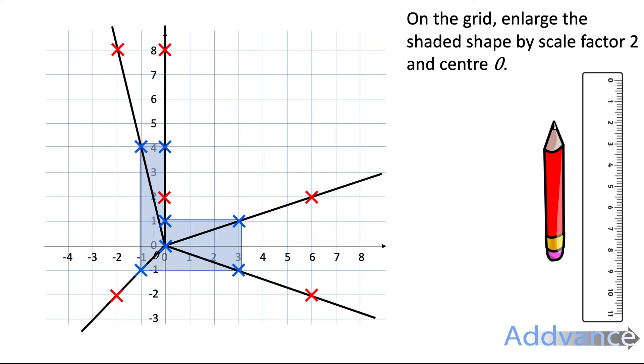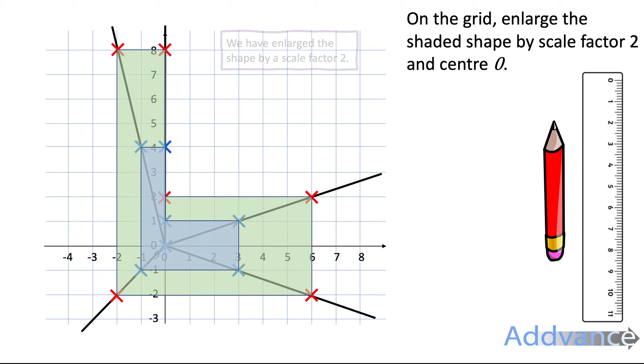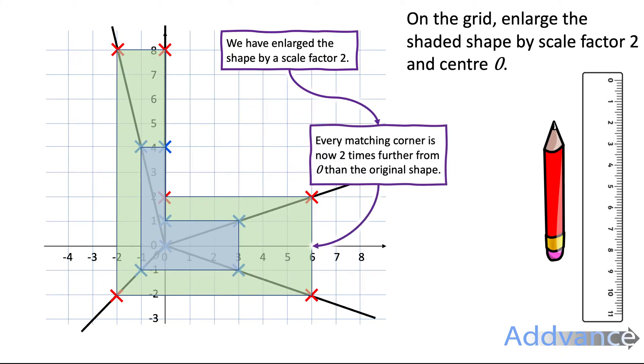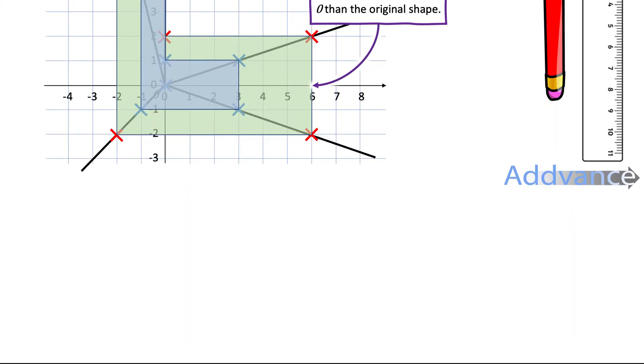And this gives us a new shape which we can connect up with our ruler. And this is the enlarged shape. It's been enlarged by scale factor 2. Every matching corner is now two times further from the centre of enlargement than the original shape.